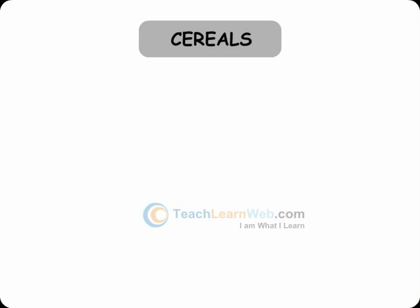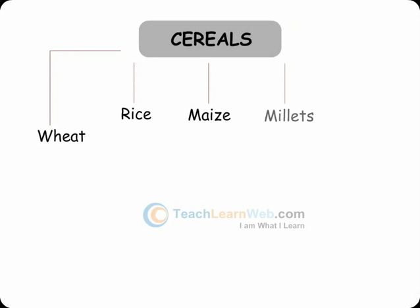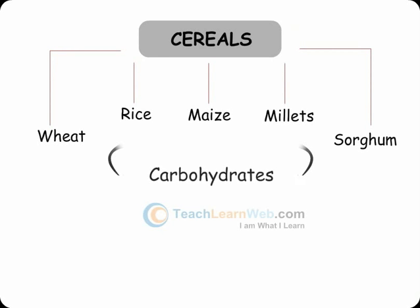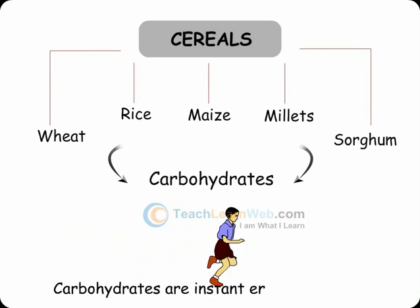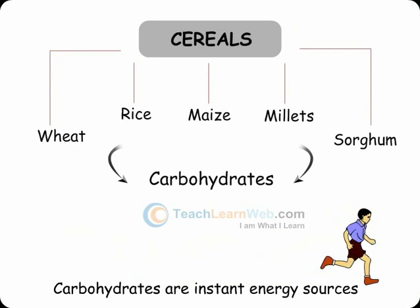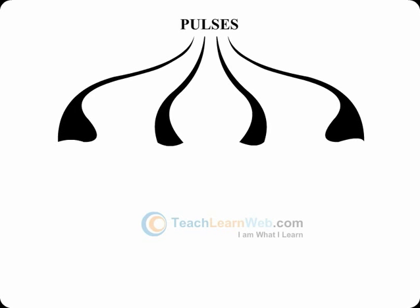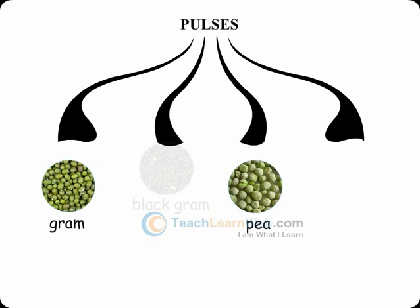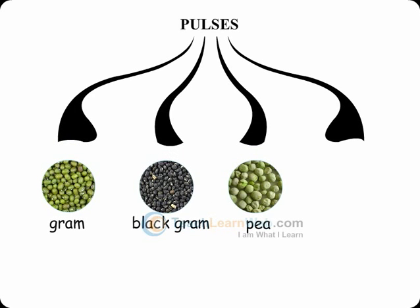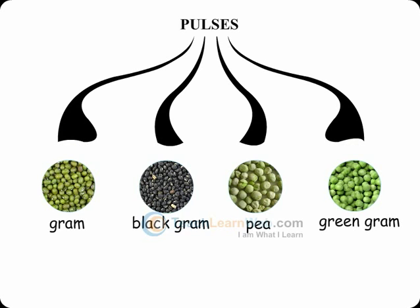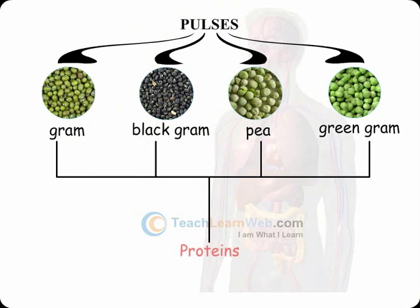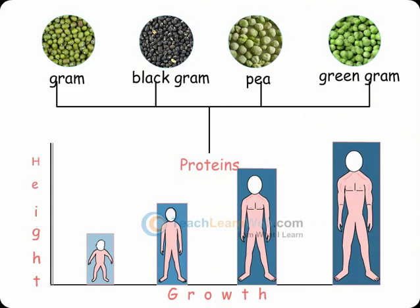Cereals like wheat, rice, maize, millet and sorghum provide us with carbohydrates, which are the instant energy sources. Pulses like gram, pea, black gram and green gram provide us with proteins, which are the building blocks of the body.